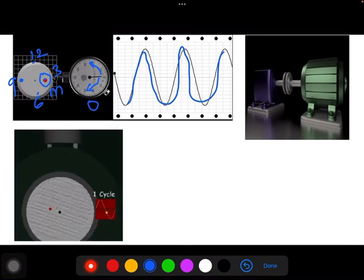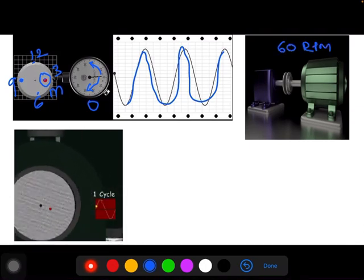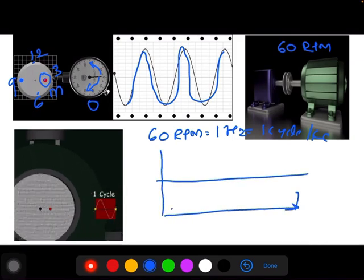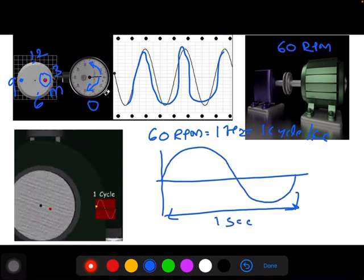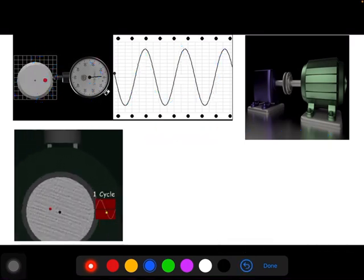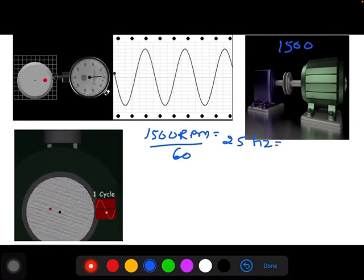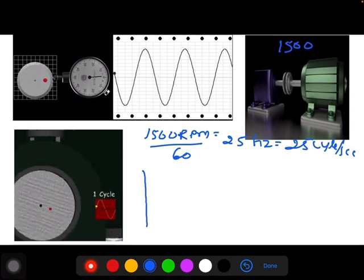If you consider any motor rotating at 60 RPM, 60 RPM means it is one Hertz, which is one cycle per second. Then for one second you have one cycle.